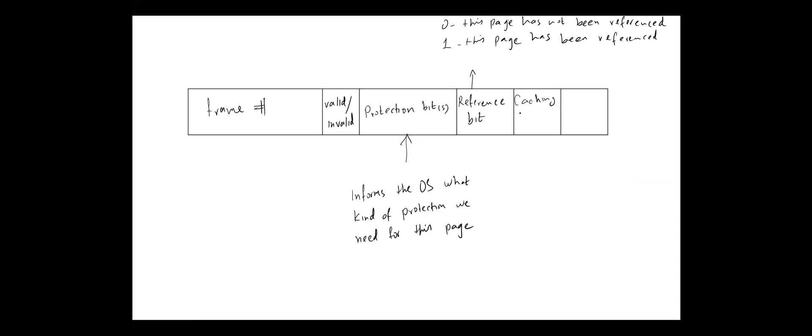The next bit is for caching — caching enabled or disabled. Sometimes we need fresh data. For example, if the main memory contains the latest information entered by the user, putting this page in the cache may show old information. So whenever freshness is required, we do not want to use caching or multiple memory levels. The information present at the level closest to the CPU and the information at the level closest to the user might be different. We want the information to be consistent — meaning whatever information the user has given, the CPU should be able to see it as fast as possible. For this purpose, the caching enabled/disabled bit is used.